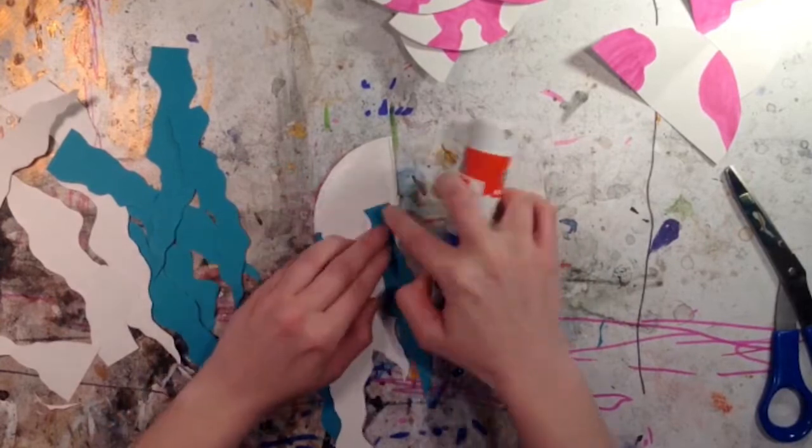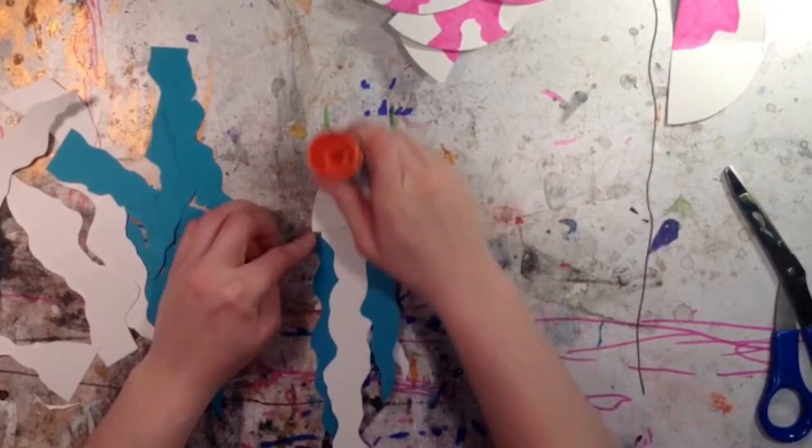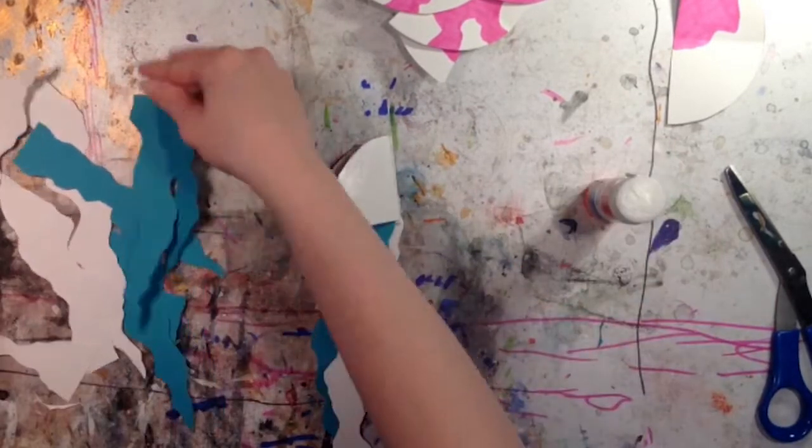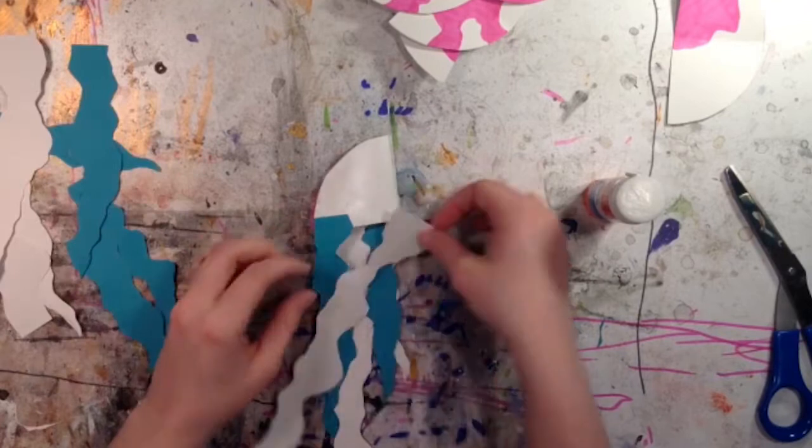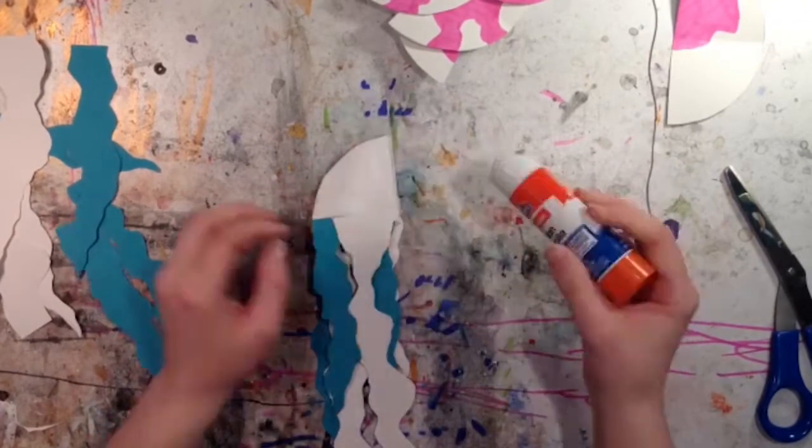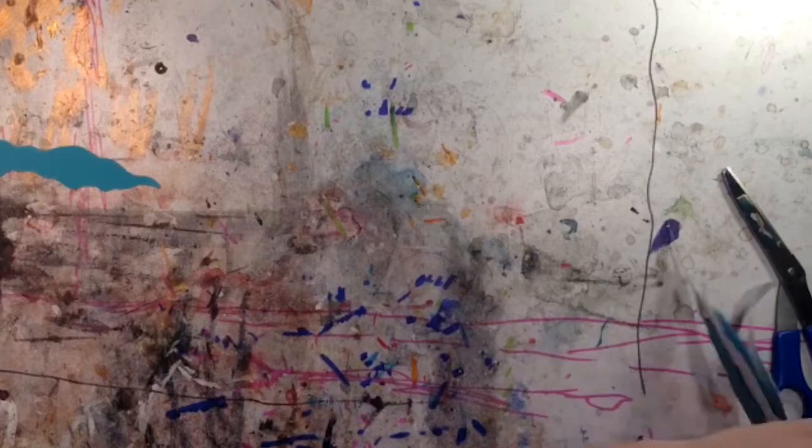Glue the third half to the second with another tentacle or two between. Repeat to the fourth half. Then take your other pile of halves and repeat the same process, again having your tentacles hanging off the flat bottom side.